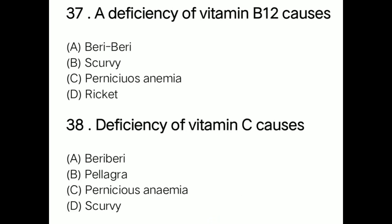Question: Deficiency of vitamin B12 causes option A beriberi, option B scurvy, option C pyridoxine deficiency, option D rickets. Correct answer is option C. Deficiency of vitamin B12 — also known as cyanocobalamin — causes pyridoxine-related deficiency symptoms.